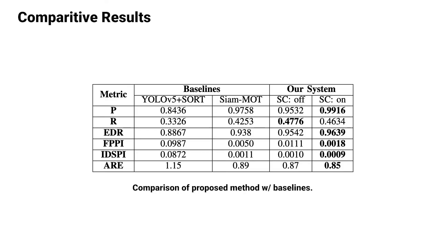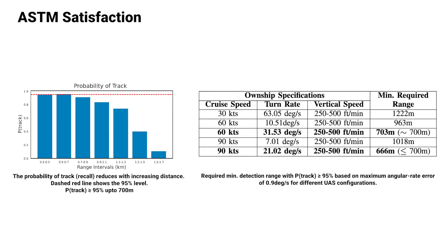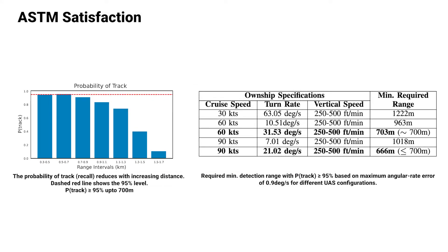When tested against baseline methods, AirTrack performs the best on all metrics including precision and recall, with or without the secondary classifier. For more details on these metrics, refer to our paper. We can see that the AirTrack system can satisfy low-risk UAS operations for two classifications, which are bolded in the table.